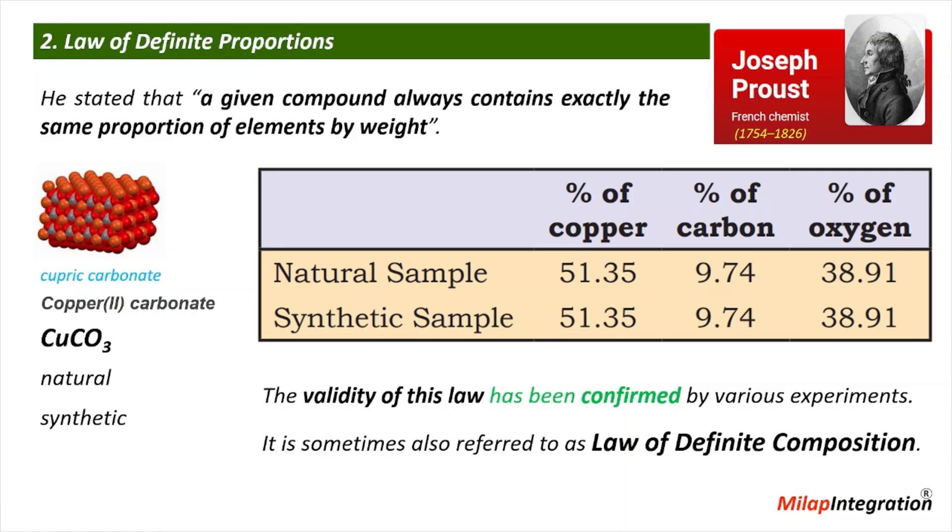If you want a particular taste in food, the composition must be fixed. If a little more salt is added, taste will change. Because what you have done is changed the composition, or you have changed the percentage of salt. So this is called law of definite proportion.